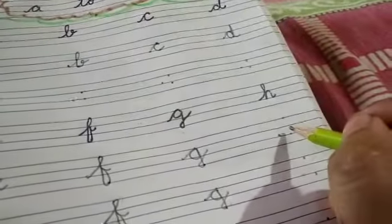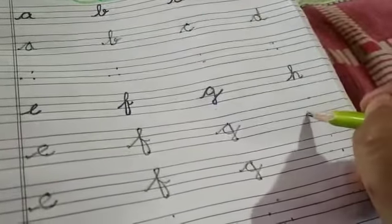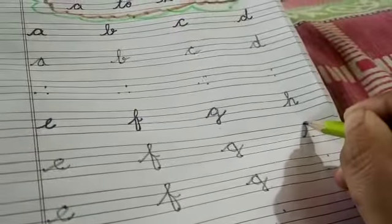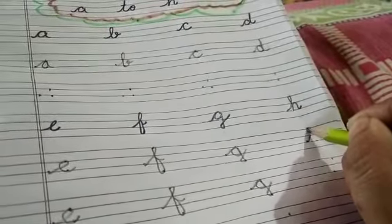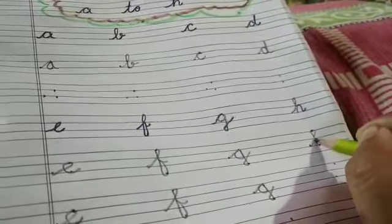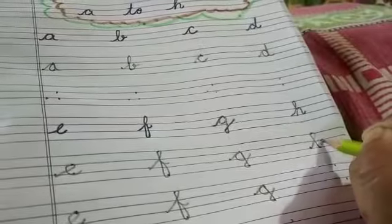Now H. Start from third line to first line, make a turn, make a standing line and go to third line.